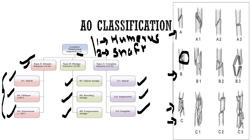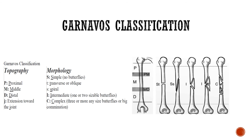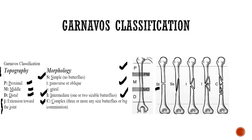The Garnabos classification categorizes shaft humerus fractures by topography and morphology. Topography divides the humerus into proximal (P), middle (M), and distal (D) thirds; if the fracture extends to the joint, it is labeled J. Morphology is subclassified as S (simple — no butterfly fragment), I (intermediate — one or two butterfly fragments), and C (complex — segmental fracture or more than two butterfly fragments).